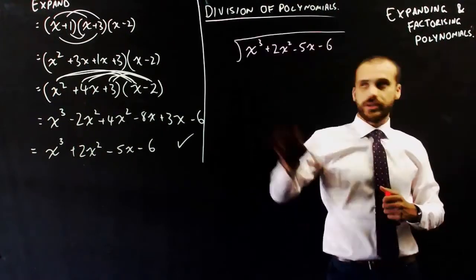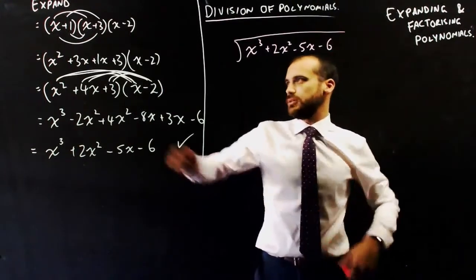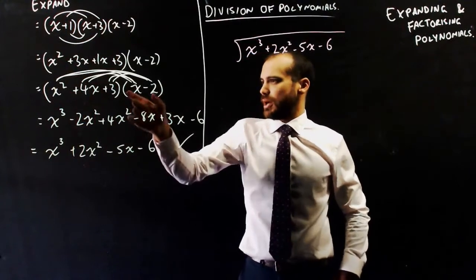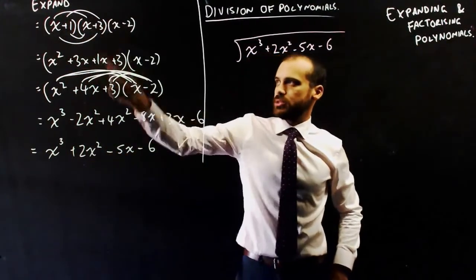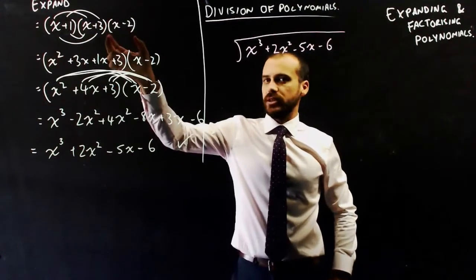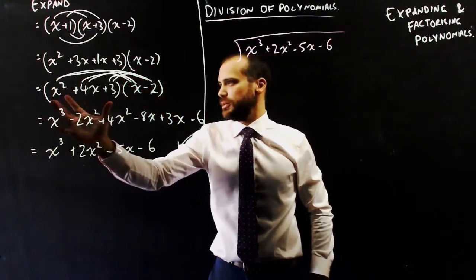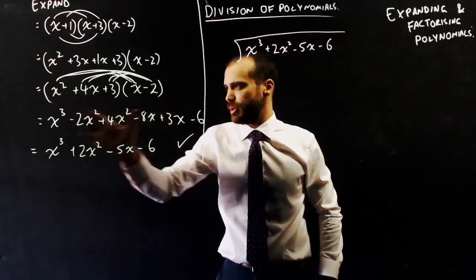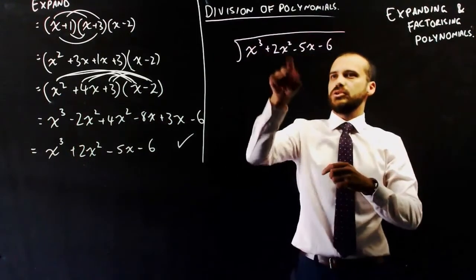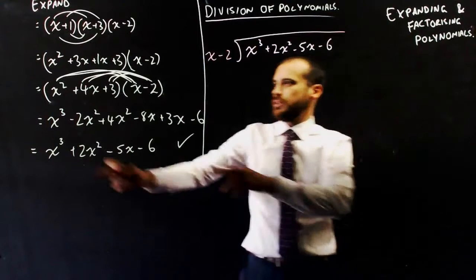We're going to do long division with polynomials. So here's my polynomial and I'm going to divide it by something. Now, think about what we did. We did this times this and then got that quadratic. And then we did this times this and we got this whole polynomial. So this times this times this makes this. So if I divide by one of these, my answer should be that. Because that times that is that. And multiplication and division are opposites. So I'm going to do x cubed plus 2x squared minus 5x minus 6, and I'm going to divide it by x minus 2. And I'll know I've done it correctly if my final answer is this.